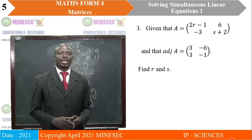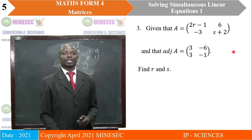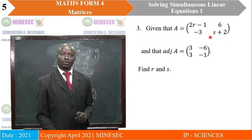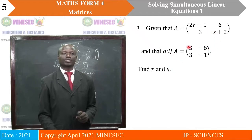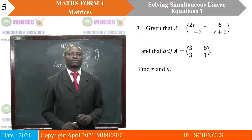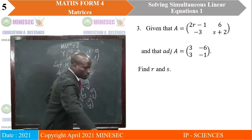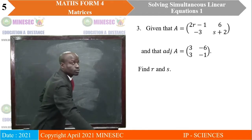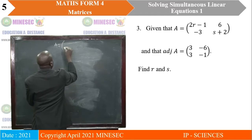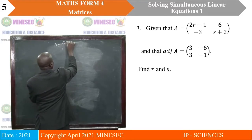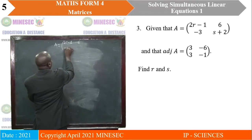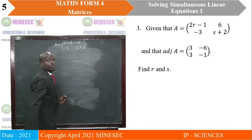The third question: given that A is equal to that matrix, and we are also told that the adjoint A is given. Find R and S. Matrix A is given as [2-R, 2R-1; 6, -3; S+2]. What we will do is look for the adjoint of this given matrix, and since they say that adjoint equals the given adjoint, we will equate the two and solve for R.